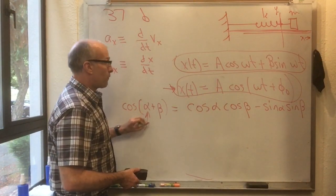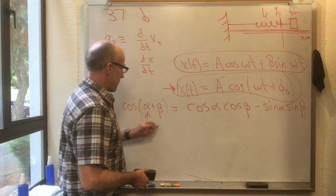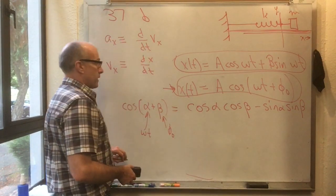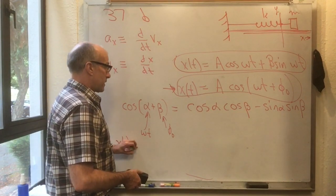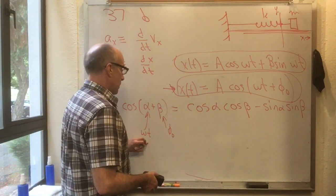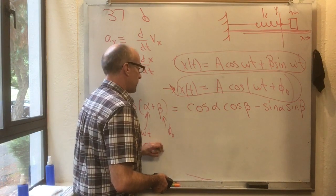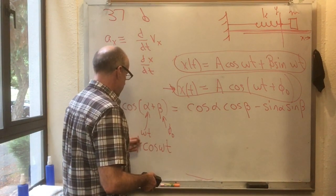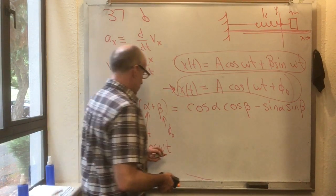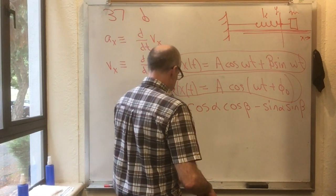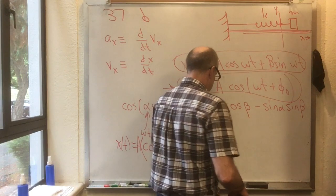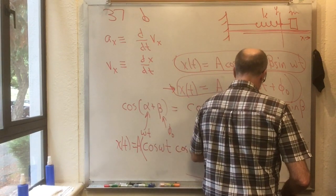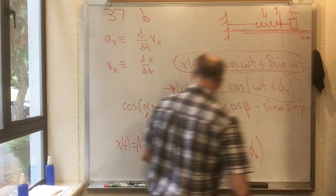And I'm going to put alpha equals omega t and beta equals phi naught into that formula. And then I've got that x of t is equal to cos omega t, still have the A, times cos of phi naught minus sine omega t sine of phi naught.